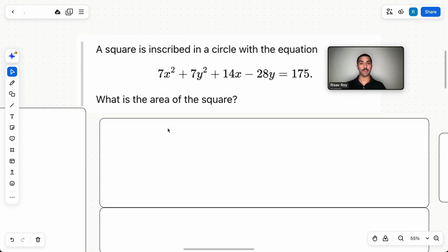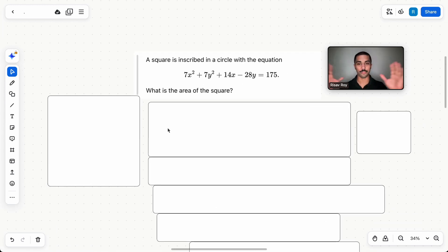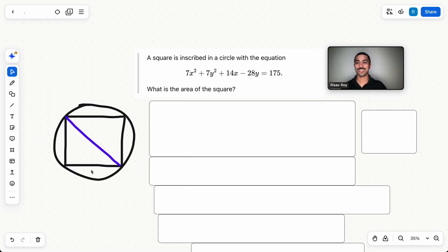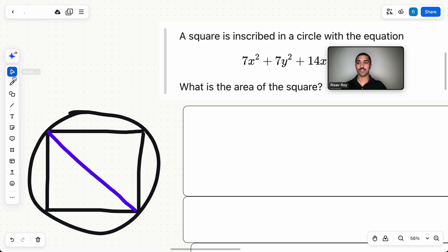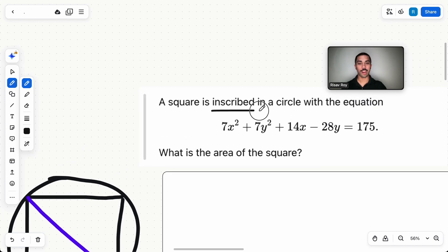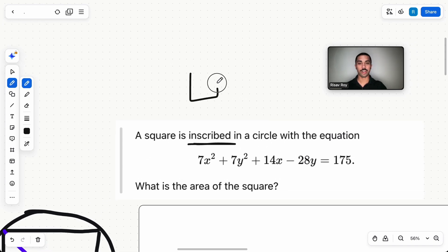A square is inscribed in a circle with the equation 7x² + 7y² + 14x - 28y = 175. What is the area of the square? I honestly love drawing diagrams. I love when it's visual so I can actually see it, right?